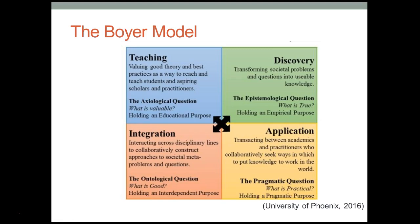The Boyer Model consists of four different domains. This is relatively important for us because this is a means to extend research beyond the traditional model of discovery, which is conducting research and publishing. The Boyer Model includes the scholarship of teaching and learning, the domain of discovery, and the domains of integration and application.